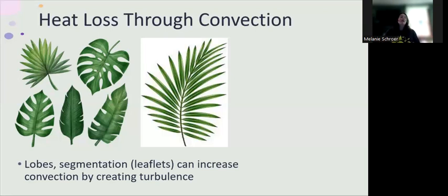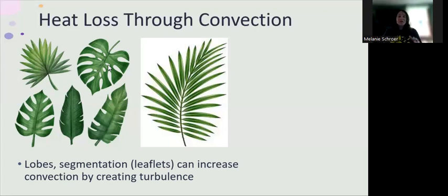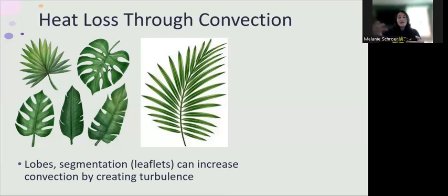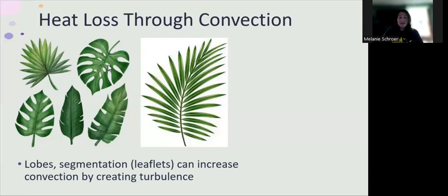The take-home message here is that lobes, segmentation, tears, or even holes in these leaves — this isn't an insect that's eaten this; this is how the leaf grows — essentially increase the surface area available for interfacing with the outside world. Also, as wind blows over these leaves, it increases the turbulence of the air, therefore whisking away that boundary layer air from around the leaf, keeping that gradient steep and allowing more heat dissipation to occur.